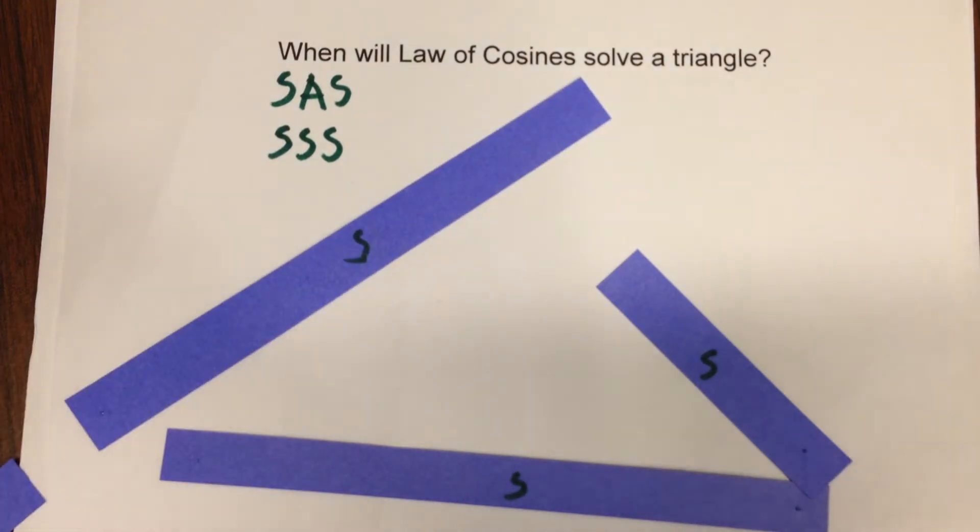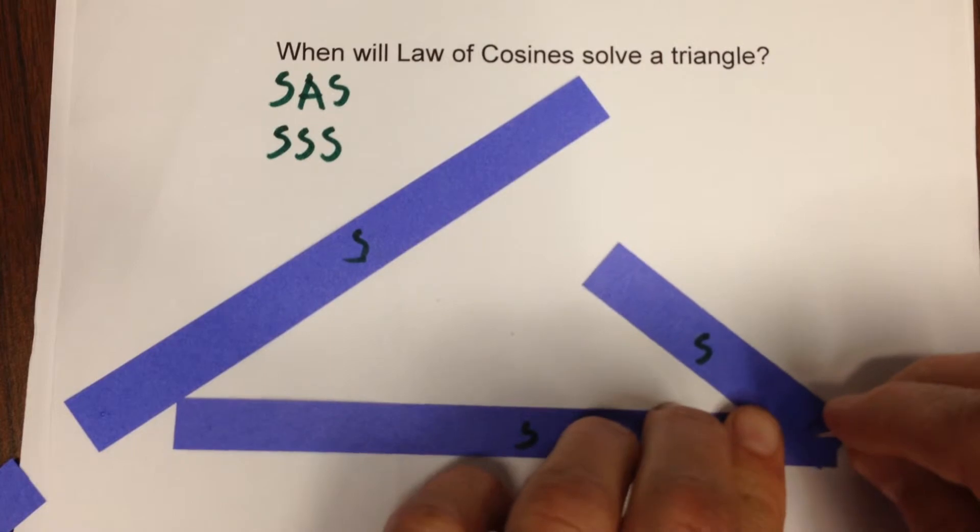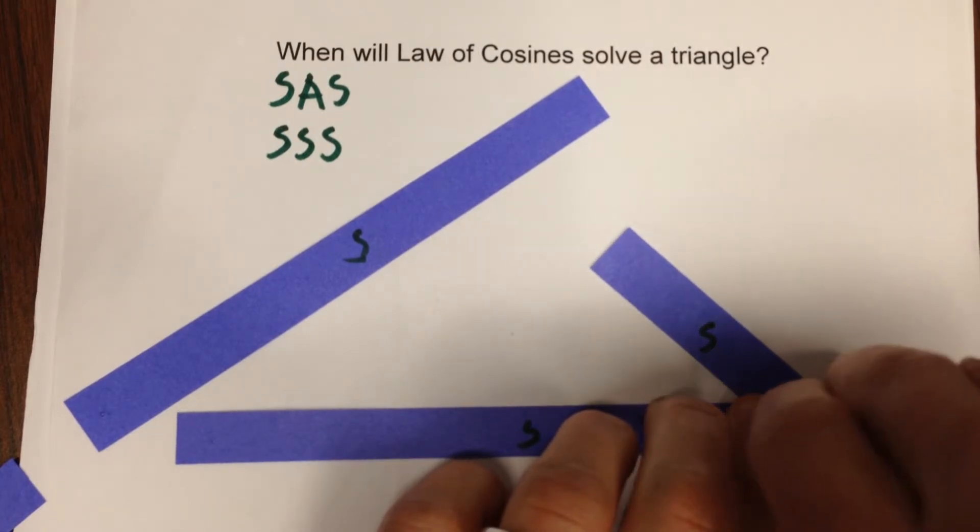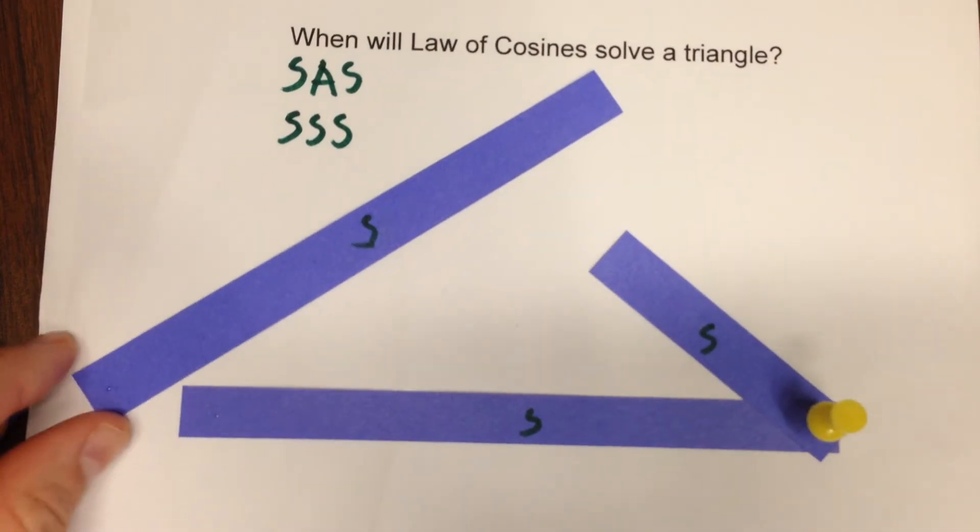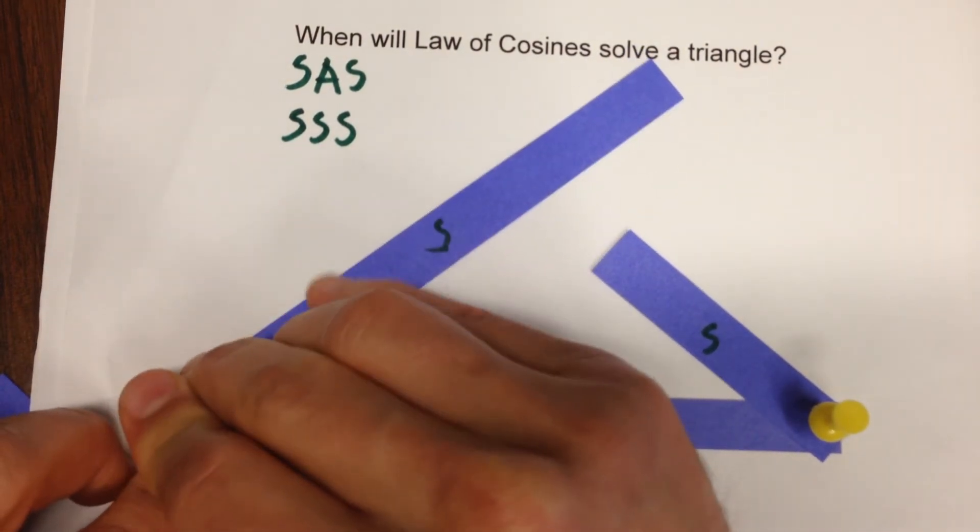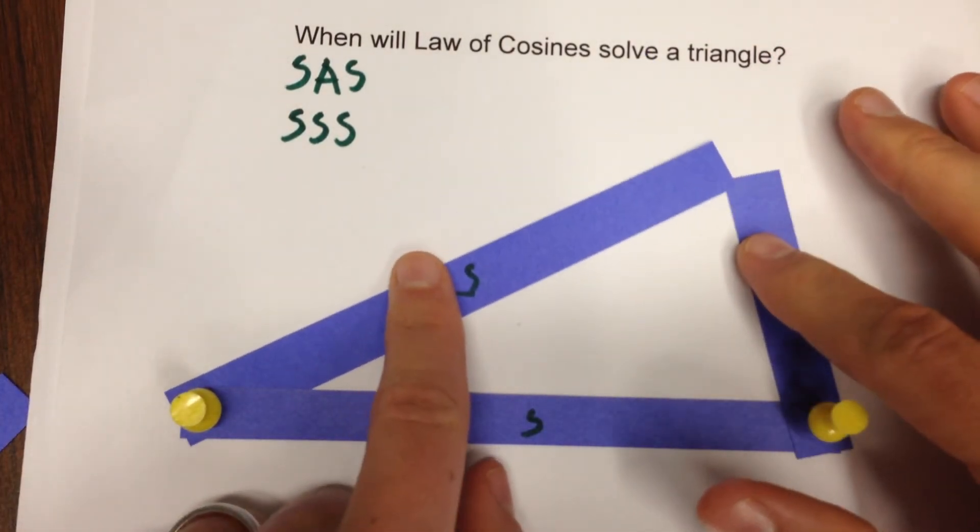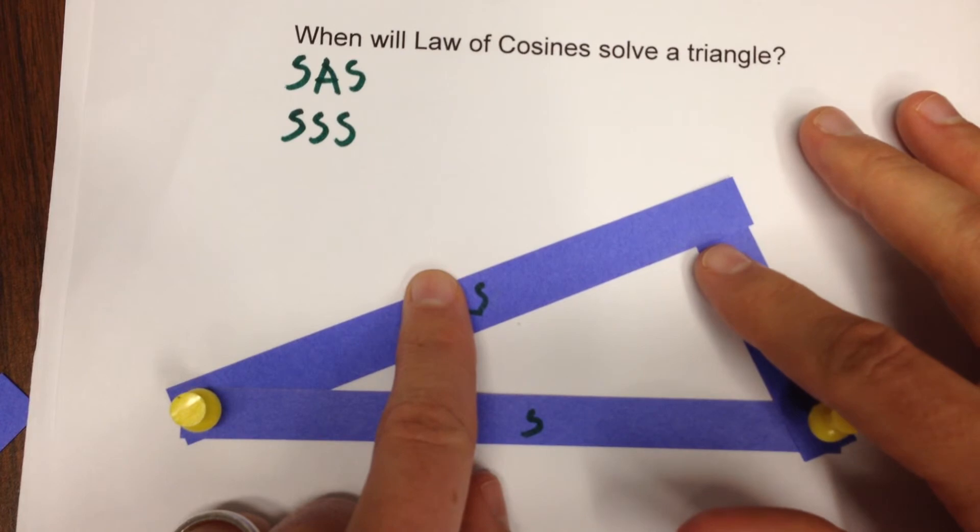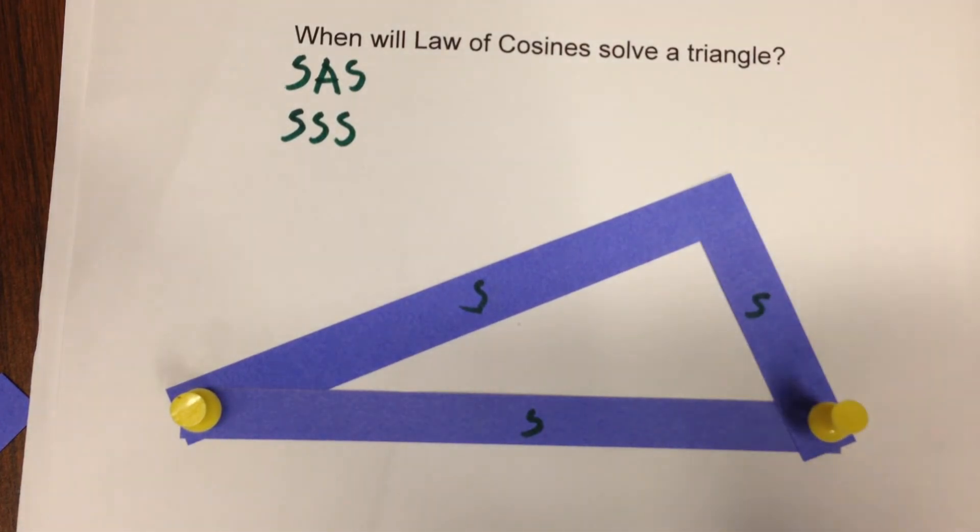But let's imagine for a moment that I didn't know what angle was going to be between these two side lengths. And also I didn't know what angle was going to be between these two sides. Well you're kind of stuck. If they're going to have the side lengths of that side you're stuck there and so all the angles are determined. So those are the two cases where law of cosines solves the triangle.